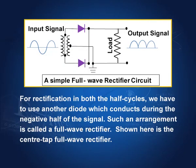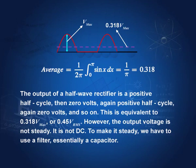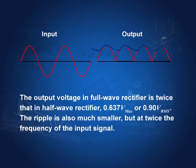In the full-wave rectifier circuit, the negative half has also been made positive, so we have output like continuous positive humps. In the half-wave rectifier, the negative half was missing; in the full-wave rectifier, we have output throughout. The average is now twice that of the earlier case — the half-wave average was 0.318 V max, so now the average becomes 0.637 V max, or 0.90 V_RMS.